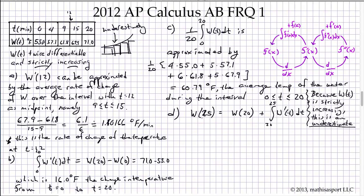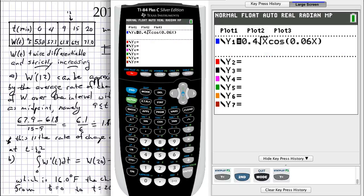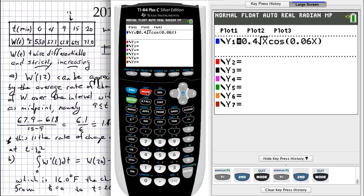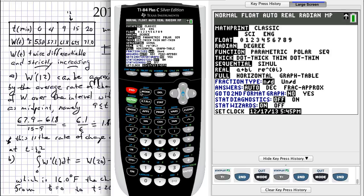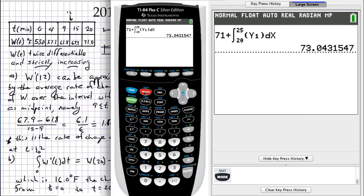Let's come back to this. W of 25 is W at some known point, and our last known point is W of 20 plus the integral of W's derivative from 20 to 25. We can evaluate that numerically. And you'll see that to save some time in this video, I've already entered Y1 as W prime of T, and then done the calculation indicated using the FNINT function on the TI-84. And I get a value of 73.0431. That's simply the temperature at T equals 25.